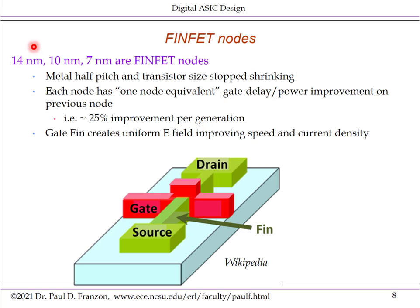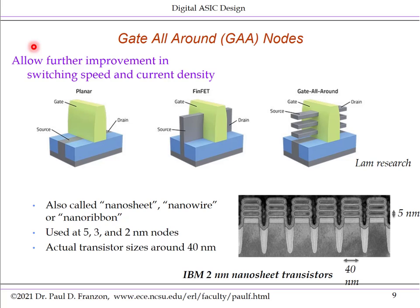Beyond the 7 or 5nm nodes, we're going to what we call gate all-around nodes, already in advanced R&D. The basic idea is: in FinFETs the channel is a fin with the gate surrounding it on three sides, whereas in gate all-around nodes, the channels have the gate surrounding them on four sides, not three sides, and the channels themselves are multiple ribbons that pass through the gate.